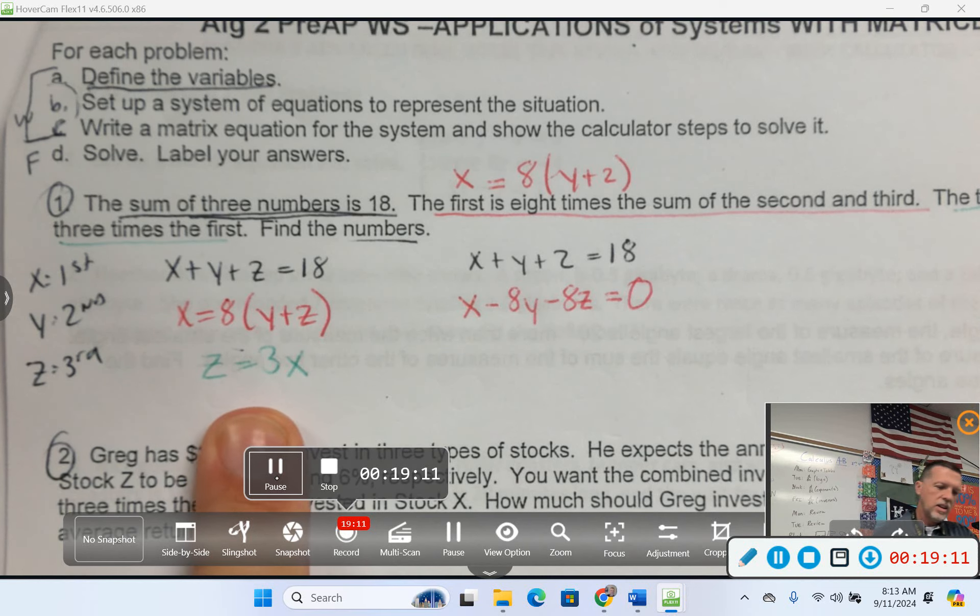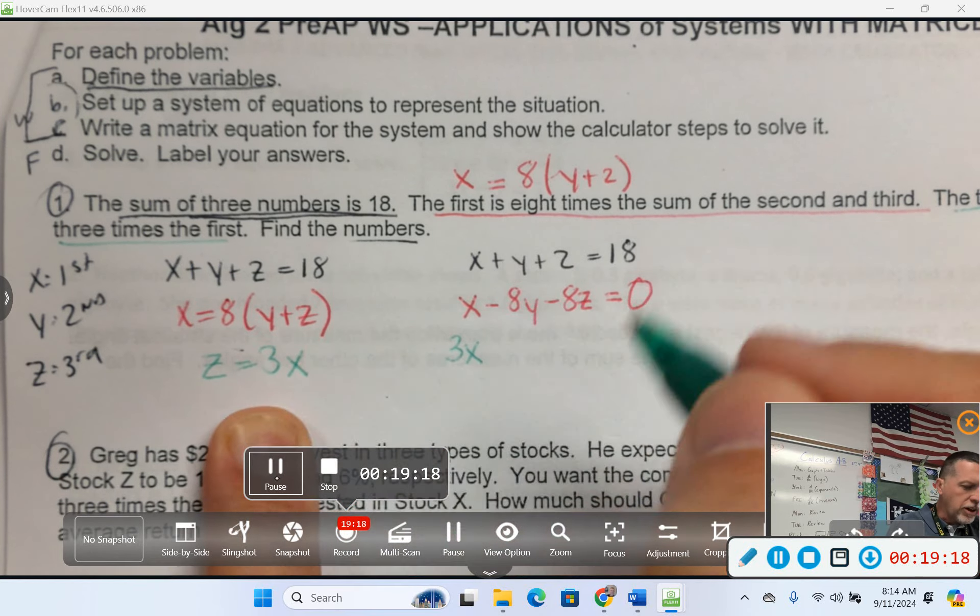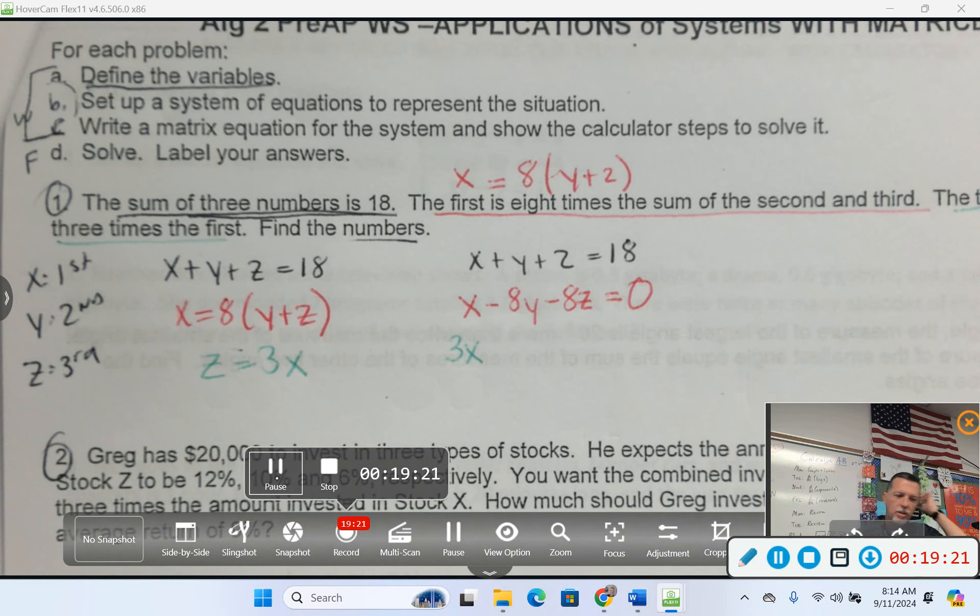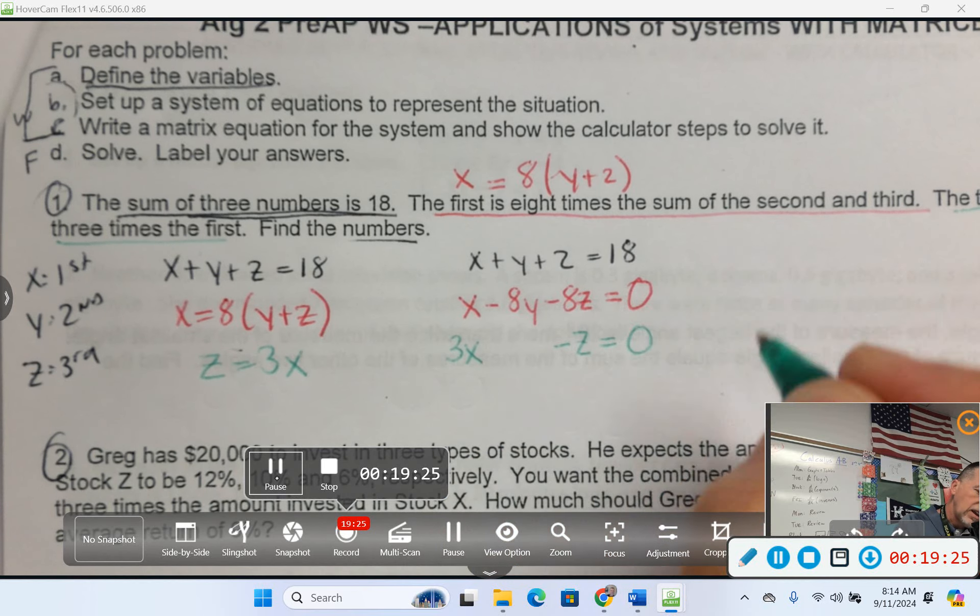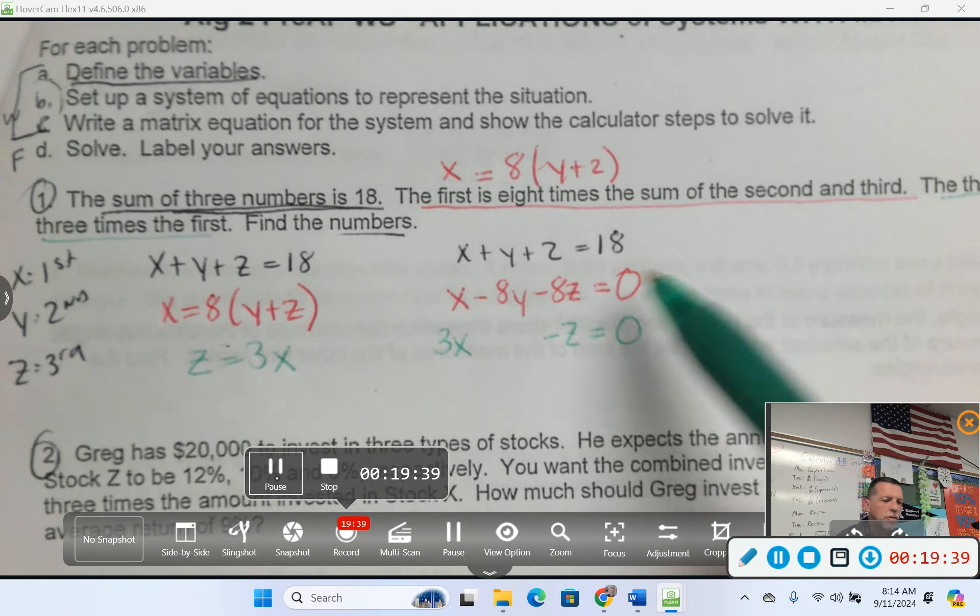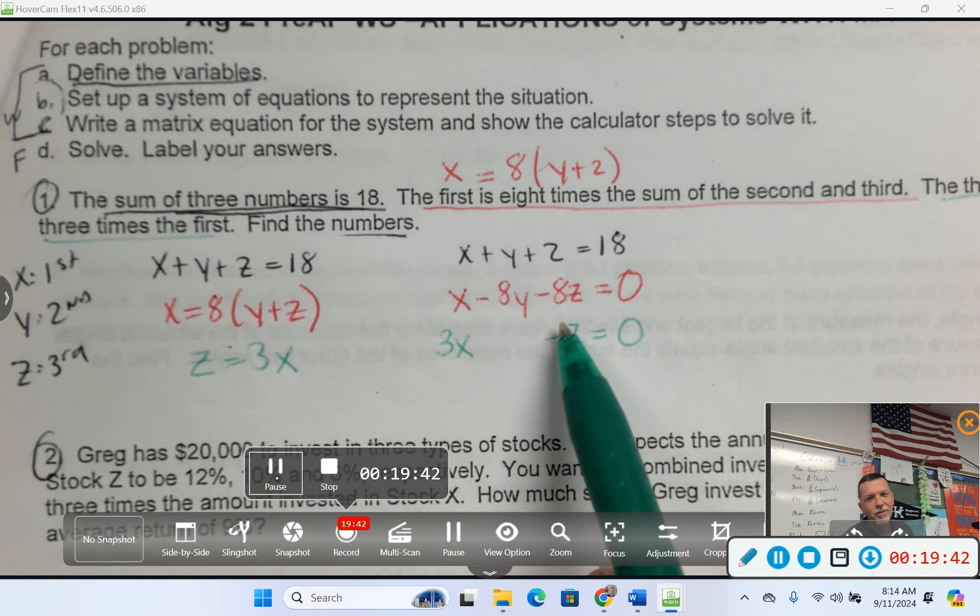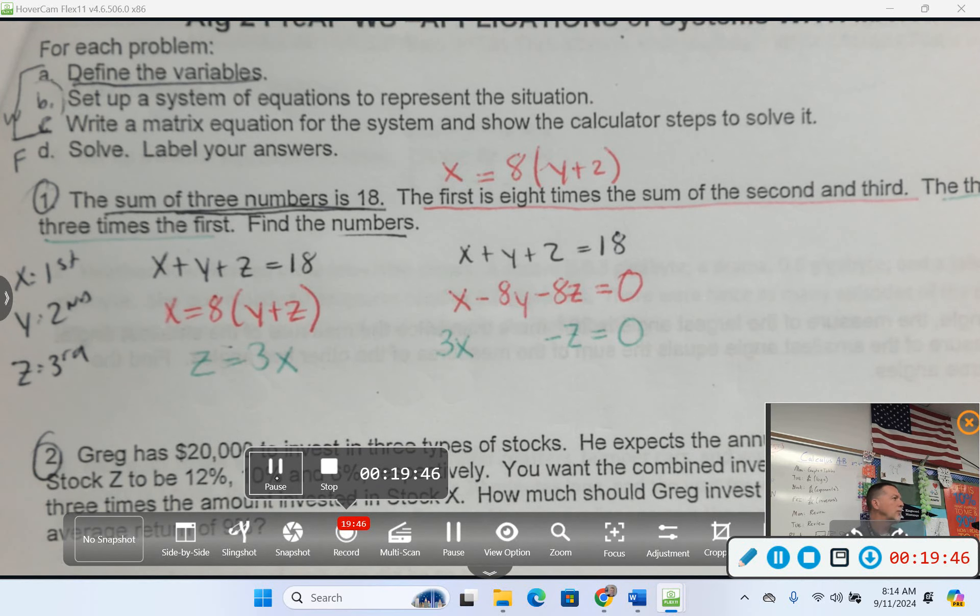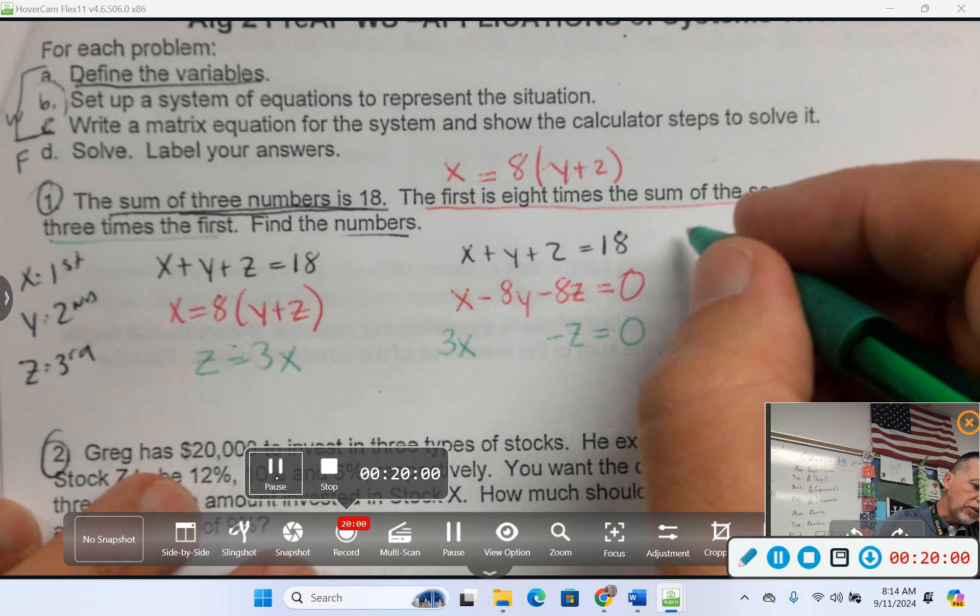What about this one? How do we put both of those on the same side with adding and subtracting? You could move the 3x over or the z over. 3x minus z equals zero. You could set them equal to each other - you could, but it would not be wrong, it just would not be helpful. The first equation was set up the way we wanted it so we didn't have to do anything to it.